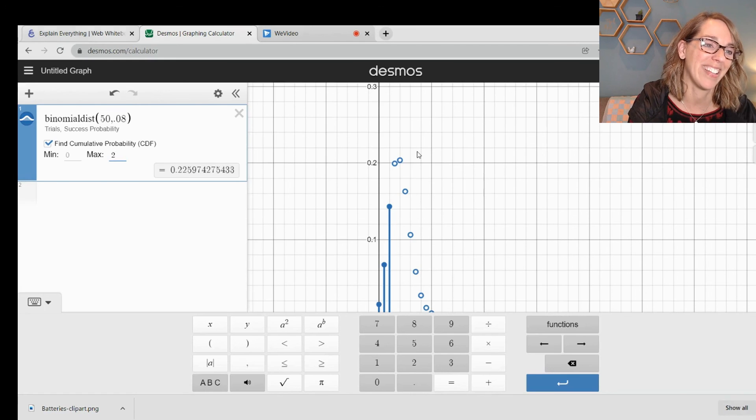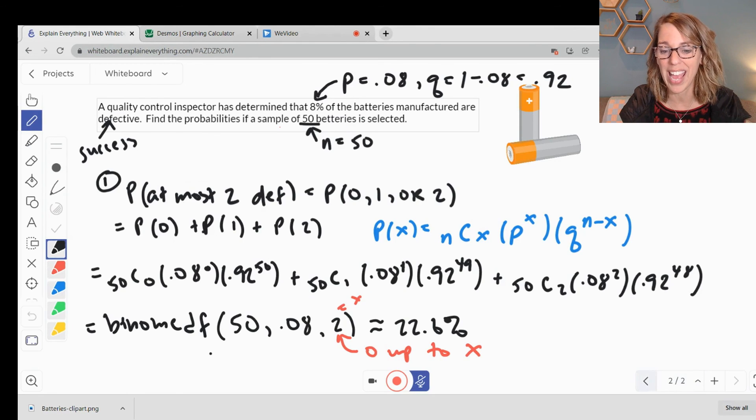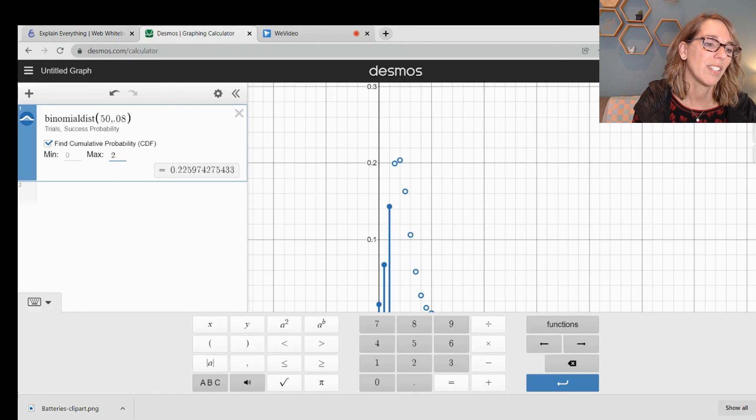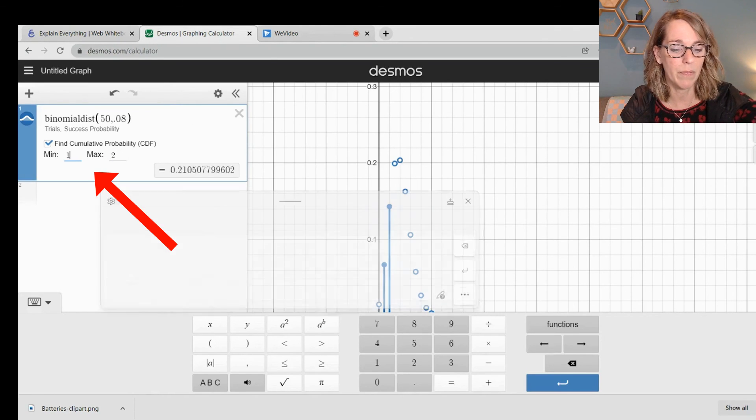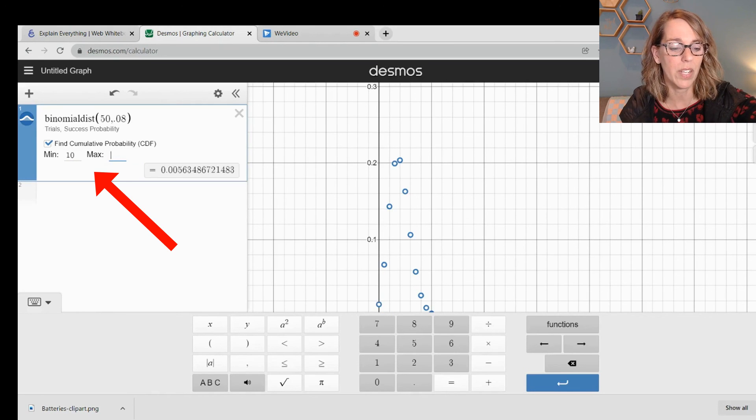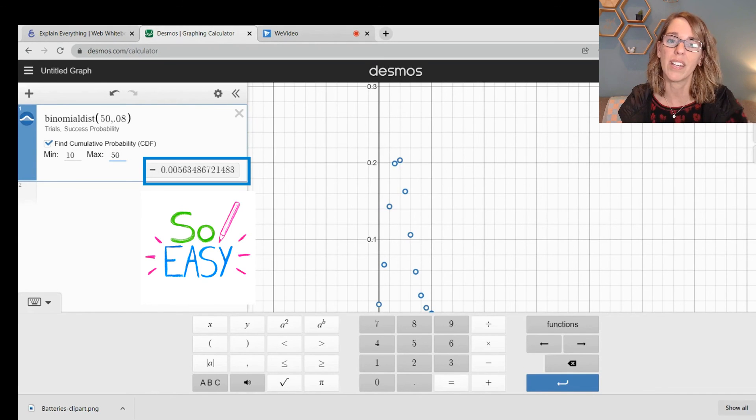If I do the next one. So let me go back to our at least example. This one was at least 10. So that would be 10 is my minimum. 50 is my maximum. Back over here to Desmos. So let's change that minimum to 10. And the maximum is going to be 50. As soon as I type that 50 in, there's the probability that I wanted. A really super easy way. I hope this was helpful. Thank you so much for watching.